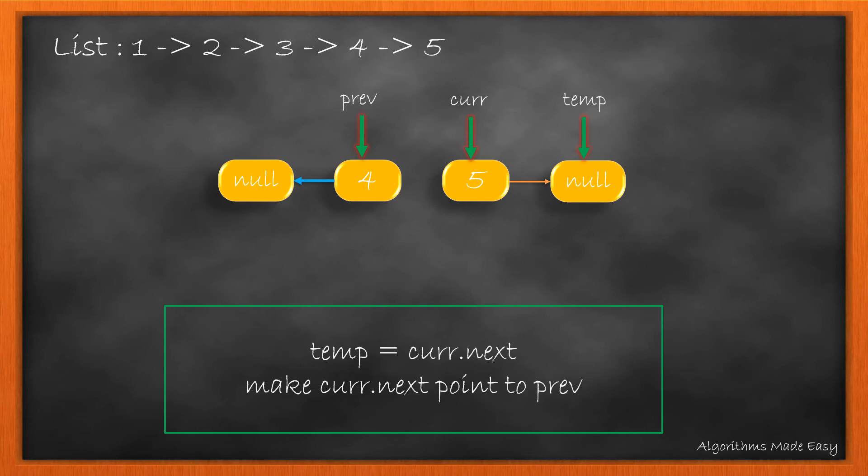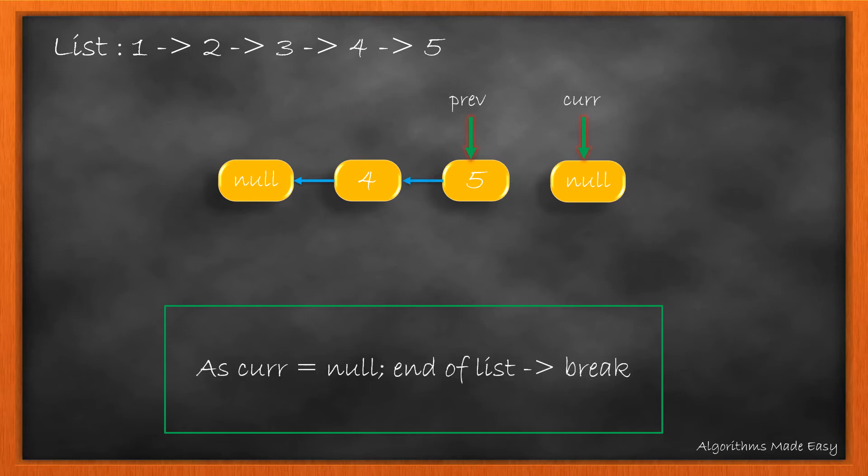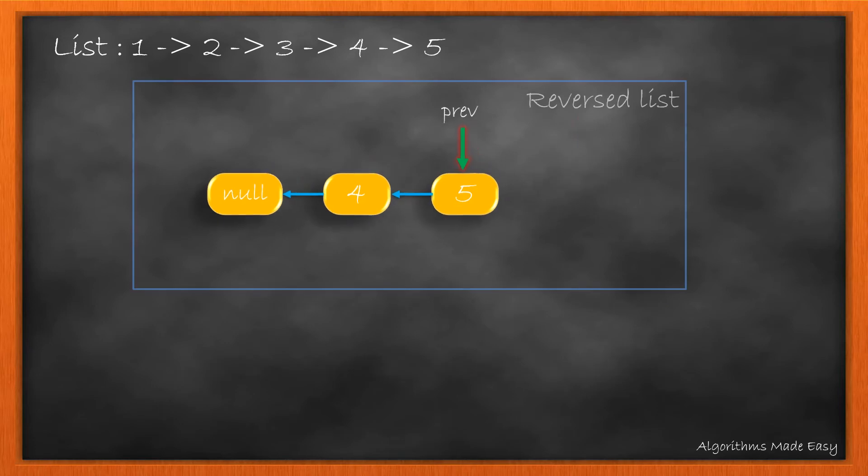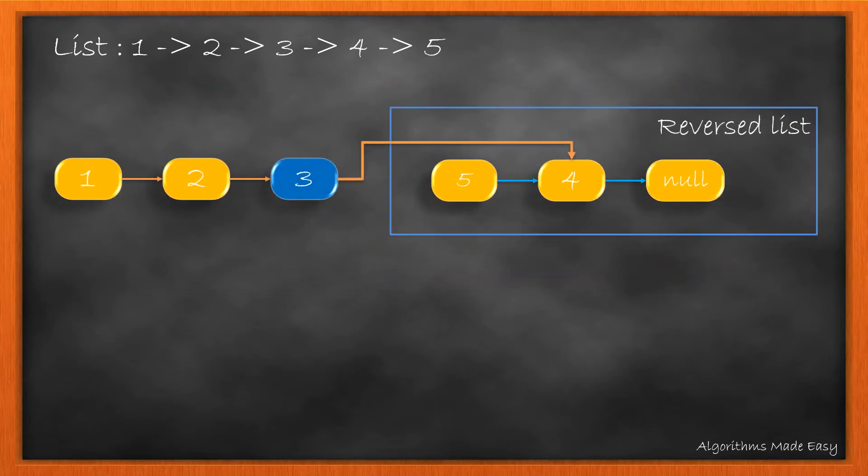We again store current.next in temp and update the pointers. Now as the current node becomes null, it means that we have reached the end of the list. So we stop. Here, we have the previous pointer at the head of the reversed list. This is how the list looks after reversing.